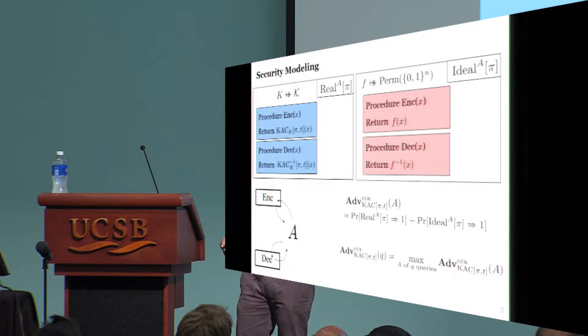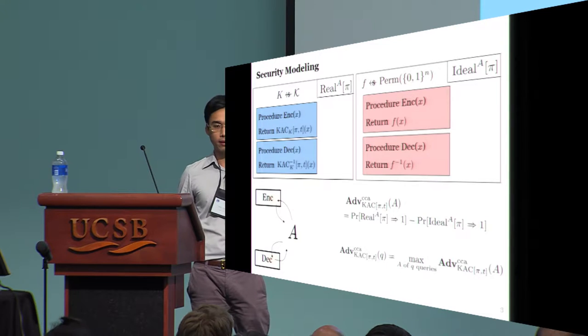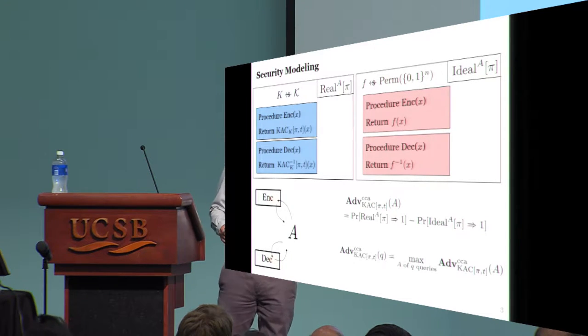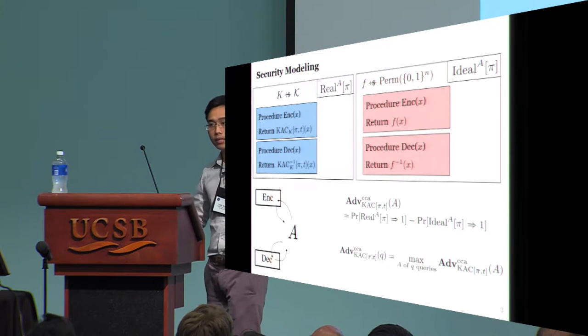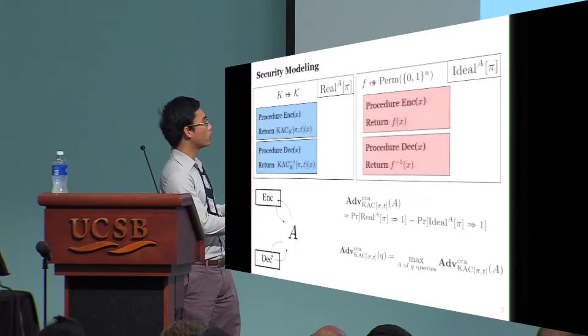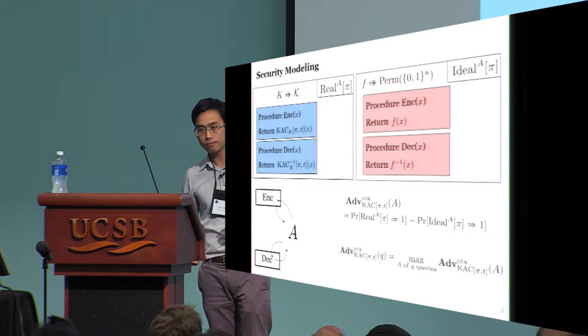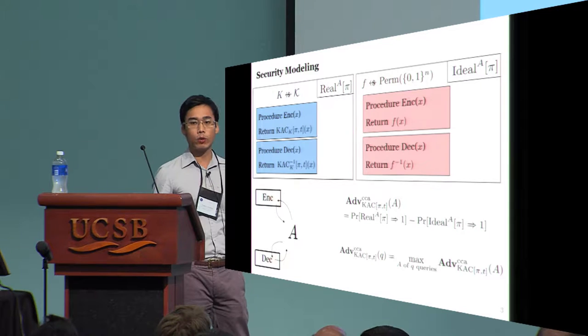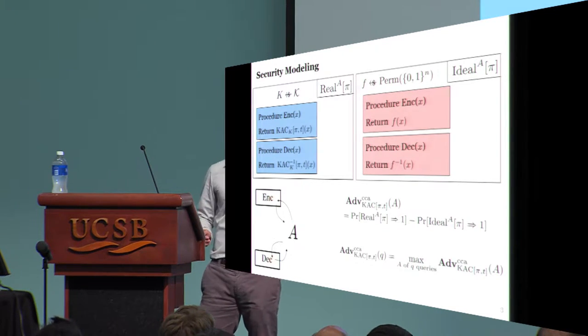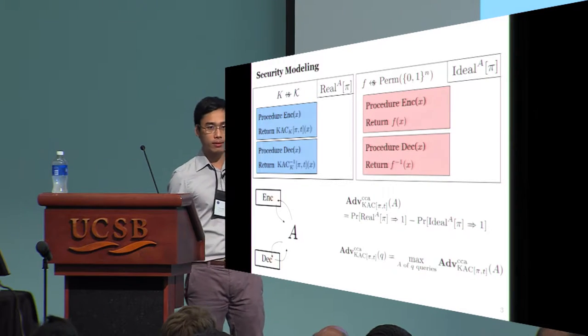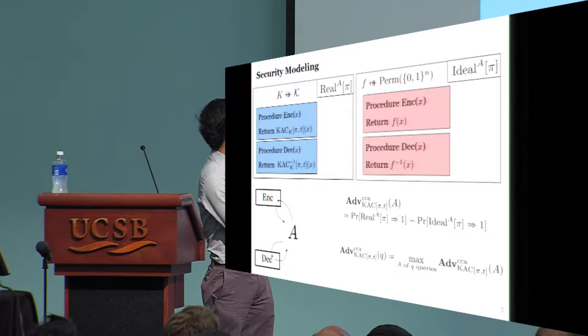To capture the security of KAC, one typically models it by the conventional CCA security notion of block ciphers. Under this notion, an adversary will be brought into a real world or an ideal world. In either world, an adversary is provided with two oracles to encrypt and decrypt. In the real world, the oracles implement the KAC block cipher and its inverse with a random secret key. In the ideal world, they implement a random permutation and its inverse.